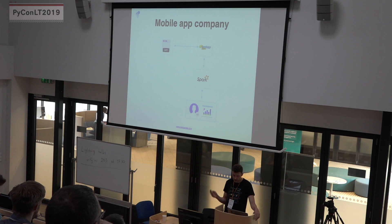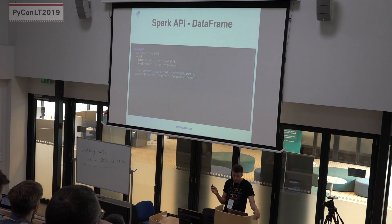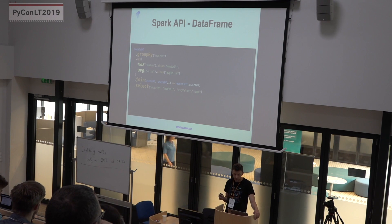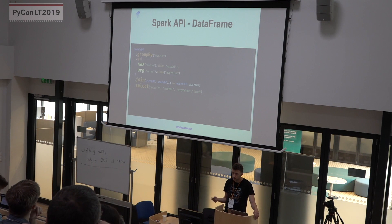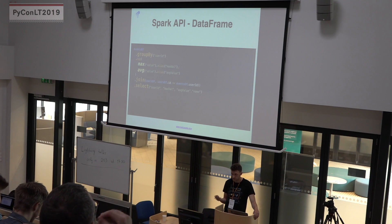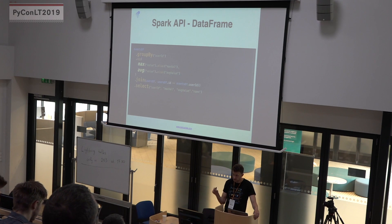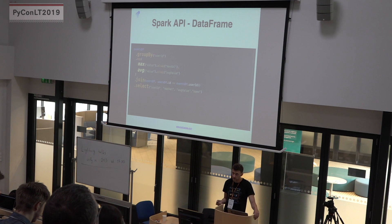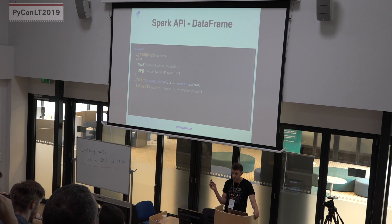So what does it look like? We are not going to go through many details. I just want to focus on the keywords, which are like group by, max, average, join, select. If you know SQL, if you know Pandas, it's super easy to start with. The Spark API is really not a problem to start with. There are some gotchas, but not really about the API — the API is simple. And once you have this kind of API, you can express all kinds of general use cases.